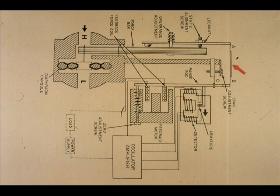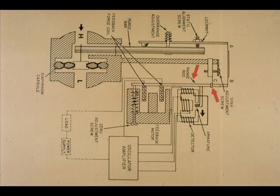This will cause the link AB at the top to move to the left. The range rod will pivot about point C.